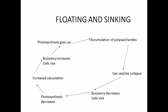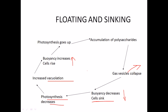When cells sink, photosynthesis decreases. At night they increase vacuolation, storing gases inside vacuoles, which increases buoyancy and causes them to rise and float on the water surface. This is how cyanobacteria maintain their buoyancy — vacuoles store gas to float, and collapsing vesicles allows them to sink.